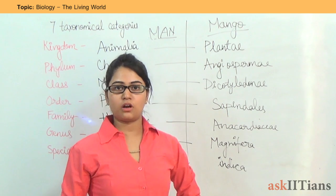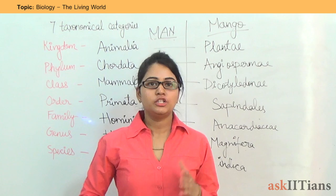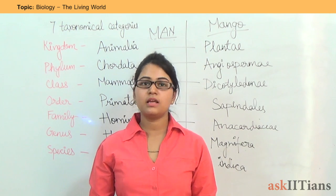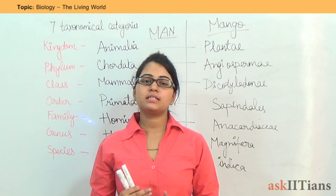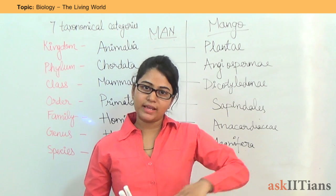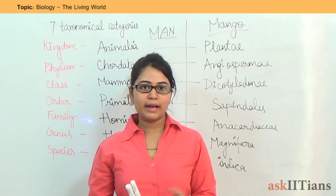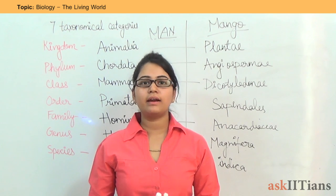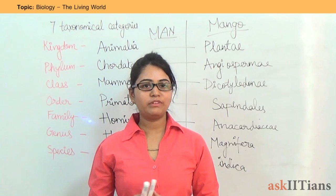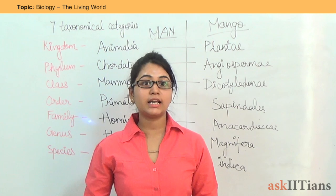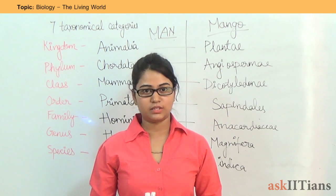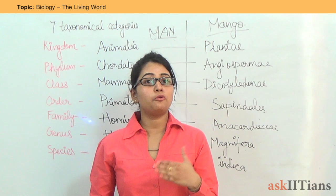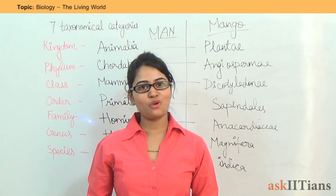This was all about today's lecture. We have discussed various taxonomical categories, nomenclature, and revising from the beginning: systematics and the basic characteristics of organisms. In our next class, we will discuss the biological classification of organisms. Till then, revise this chapter and go through a few more examples. Thank you so much.